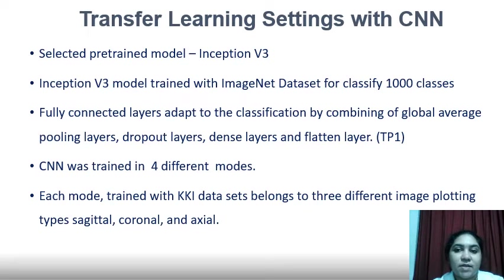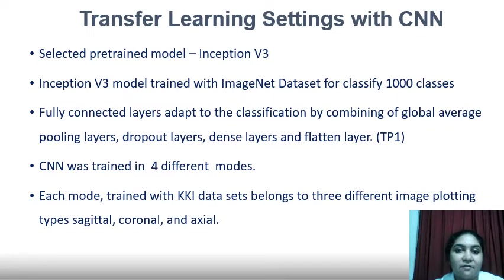For the transfer learning settings with the convolutional neural network, the Inception V3 model — trained on the ImageNet dataset — is widely applied in medical transfer learning applications. This model has a lesser number of parameters and generally provides high accuracy compared to other models like VGG16 and ResNet. I selected Inception V3 as my pre-trained model. The output layers were adapted to classify ASD from controls by combining global average pooling layers, dropout layers, dense layers, and flattened layers. The CNN was then trained in four different modes.